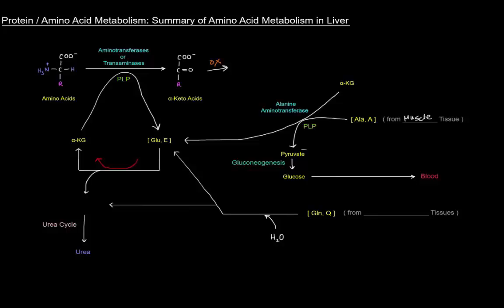The pyruvate that results from that can of course go through gluconeogenesis in the liver to produce glucose, and that glucose can be sent back to the blood in the glucose-alanine cycle — sending that glucose back into the muscle cells.